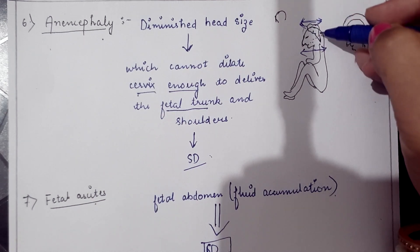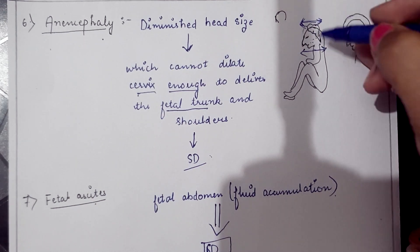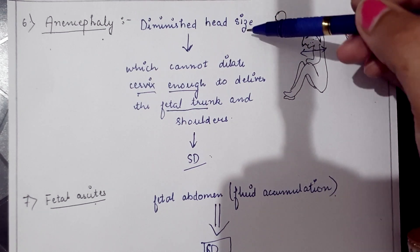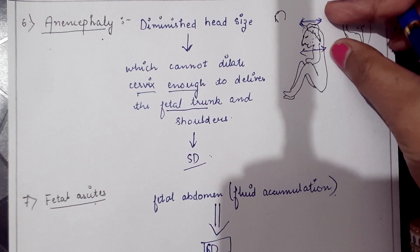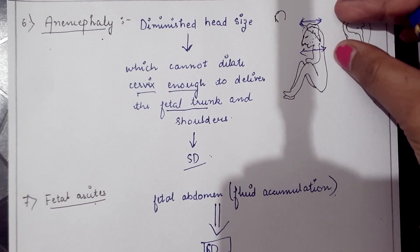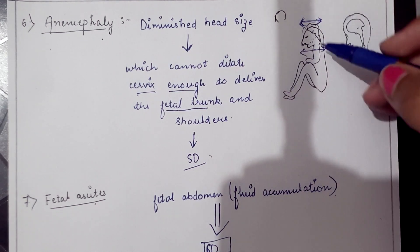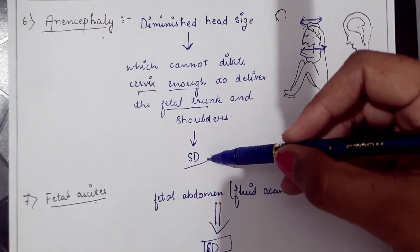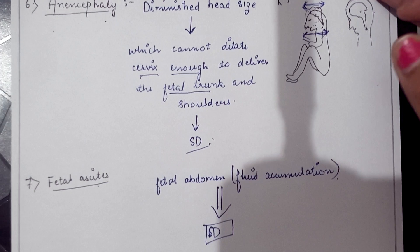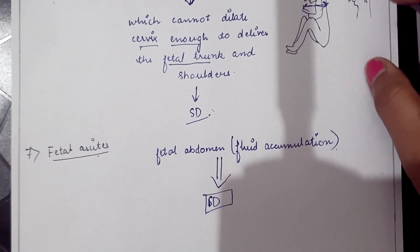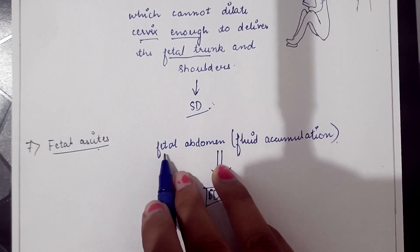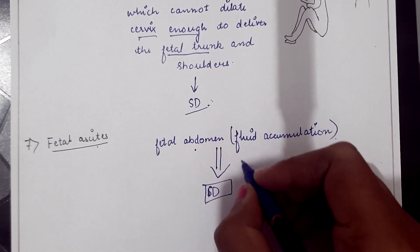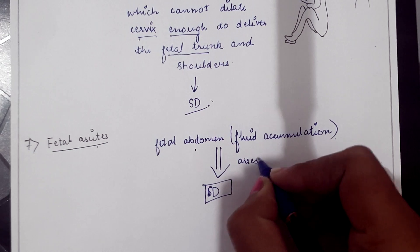Anencephaly is a congenital disorder where the brain and fetal skull are not properly formed. The reduced head size means the cervix does not dilate enough to deliver the fetal trunk and shoulders, causing shoulder dystocia. Fetal ascites — fluid accumulation in the fetal abdomen — may also cause arrest and resulting dystocia.